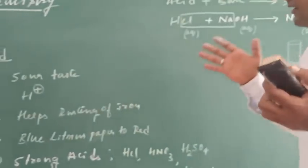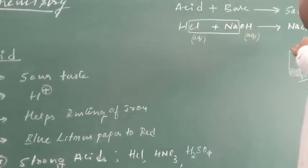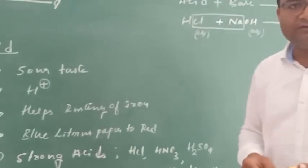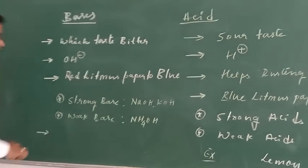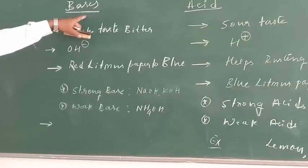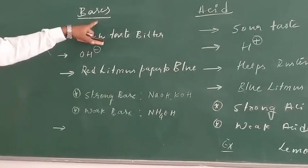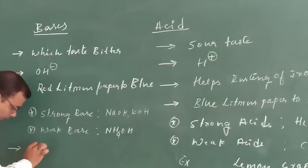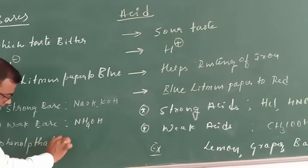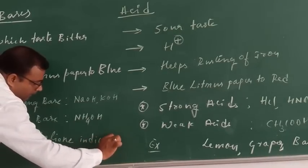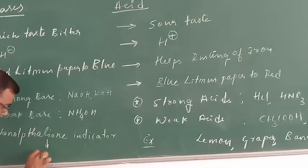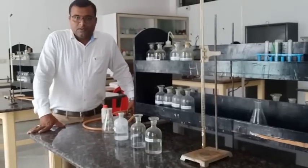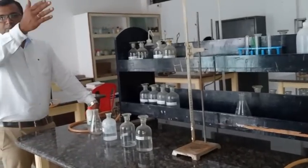So this is about acids, bases, and salts. Now I will show you a small example. One more thing to note: when phenolphthalein indicator is added to a base, it changes to pink color. I will show you this in my lab — please come with me. This is my lab class, and I have done some classes in the lab. Let me show you the board where I have written notes, along with the laboratory setup.